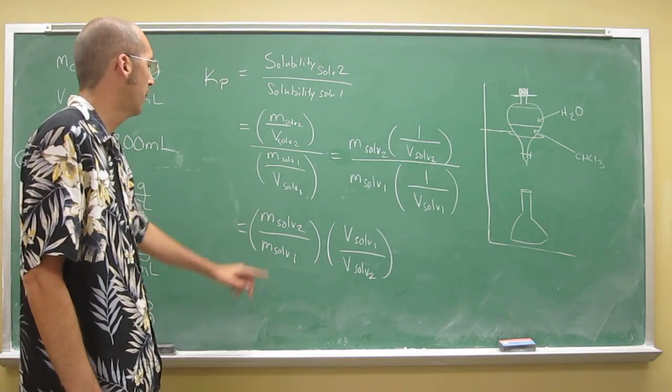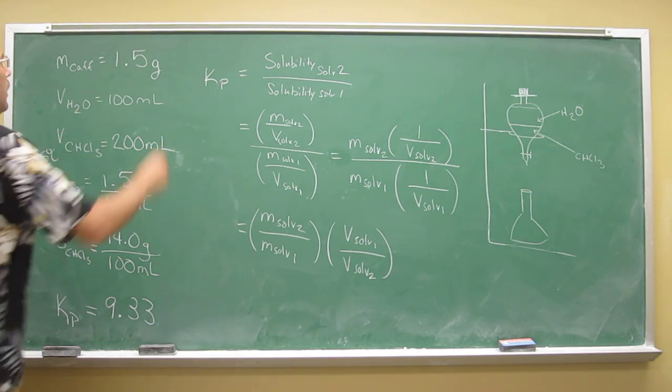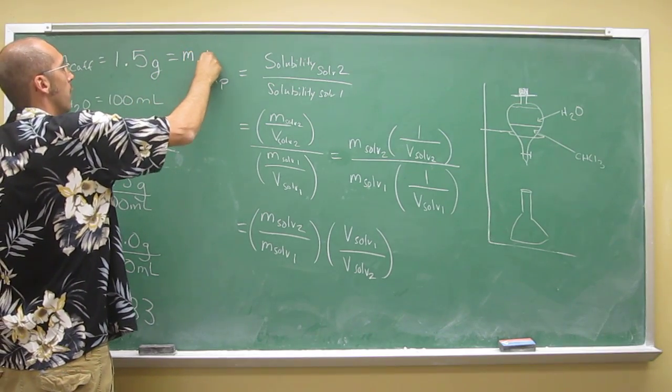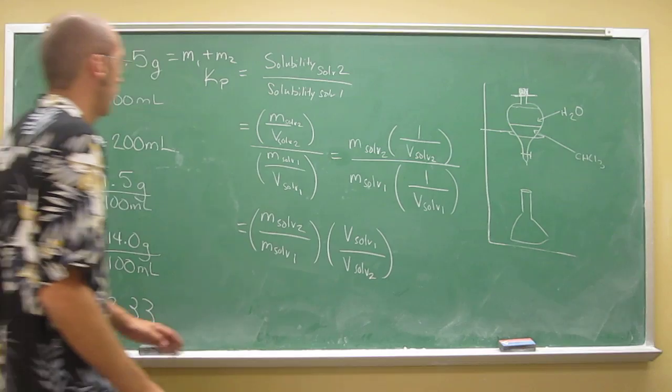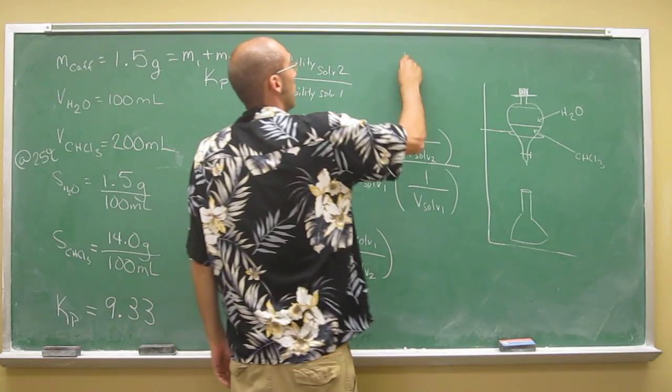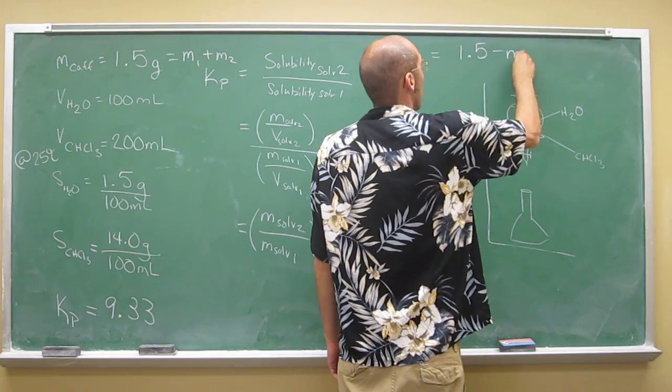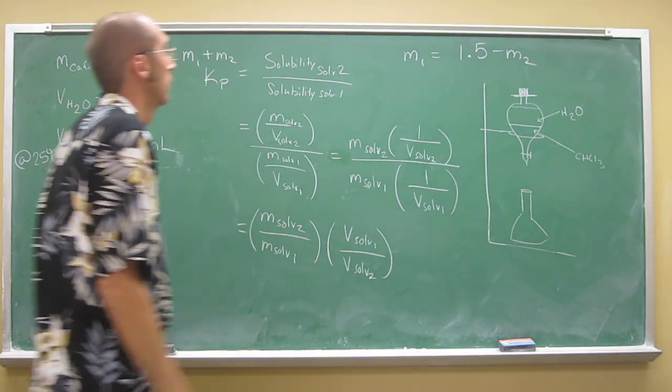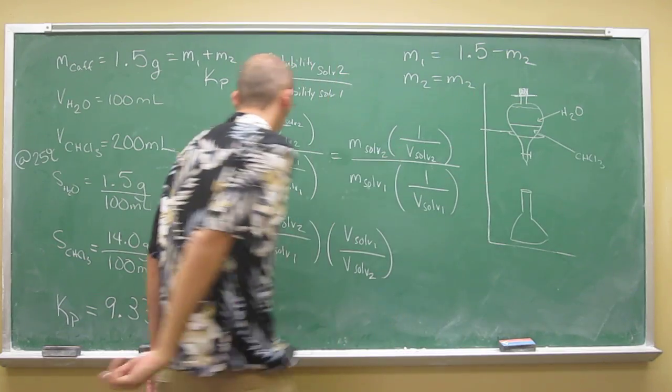But we don't know what mass is in solvent 1 and what mass is in solvent 2, but we do know the total mass of caffeine. And we know that that's going to equal the mass in 1 plus the mass in 2. So since we started with it all in solvent 1, we'll just say the mass of solvent 1 is going to be 1.5 minus the mass that left. And then M2 stays as M2.